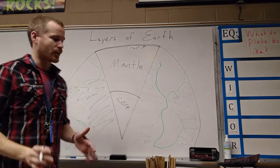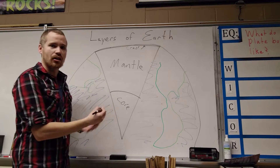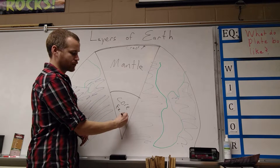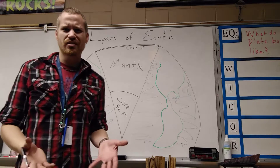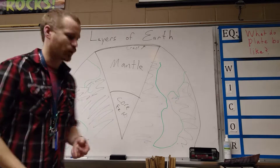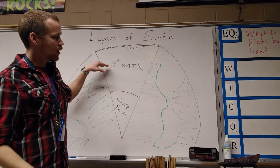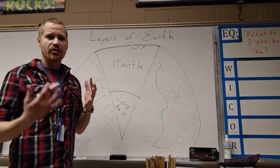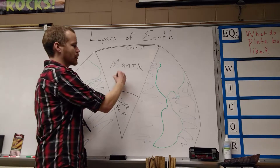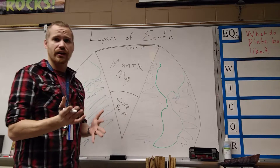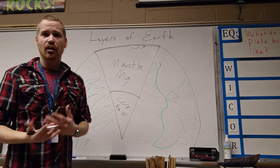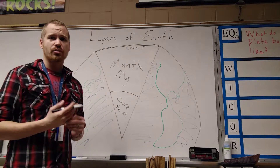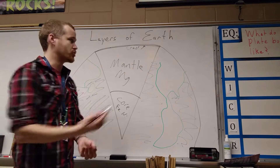The biggest difference here: our core is going to be made of a lot of iron and nickel — there are other things in there too, but this is the primary thing. The mantle is going to be very similar to the crust, but there's a lot more magnesium in this layer. The crust is mostly made up of silicate-type materials, which are mostly silicon and oxygen.